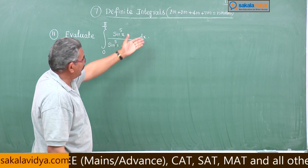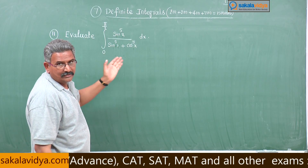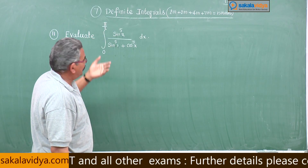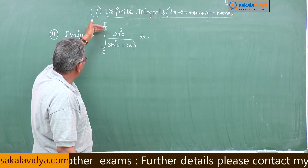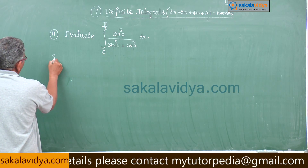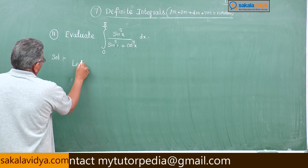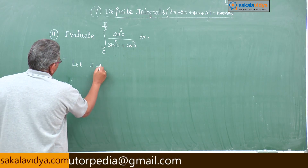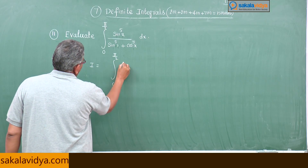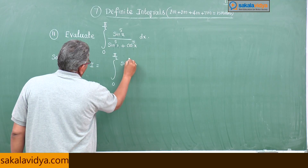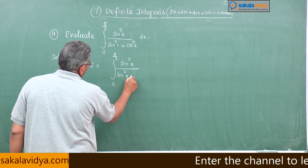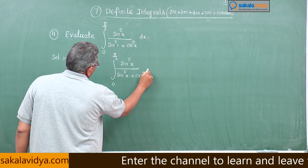If you add the two expressions you get 1 in the denominator, so 2I equals the integral of dx from 0 to π/2 and we can integrate easily. Let I equal the integral from 0 to π/2 of sin^π(x) divided by [sin^π(x) + cos^π(x)] dx.